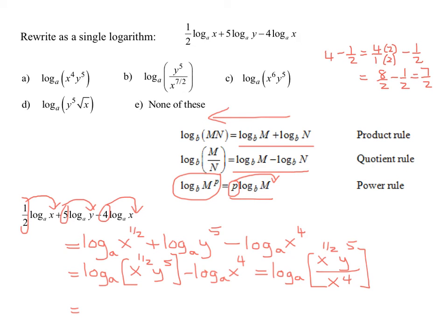And remember, the answer is going to be in the denominator. So I'm going to have log to the base a of y to the 5th stays in the numerator. And then I'm going to have x to the 7 halves is going to be in the denominator. And now can I simplify any more? No, because I have different bases, can't combine exponents. So this is my answer.